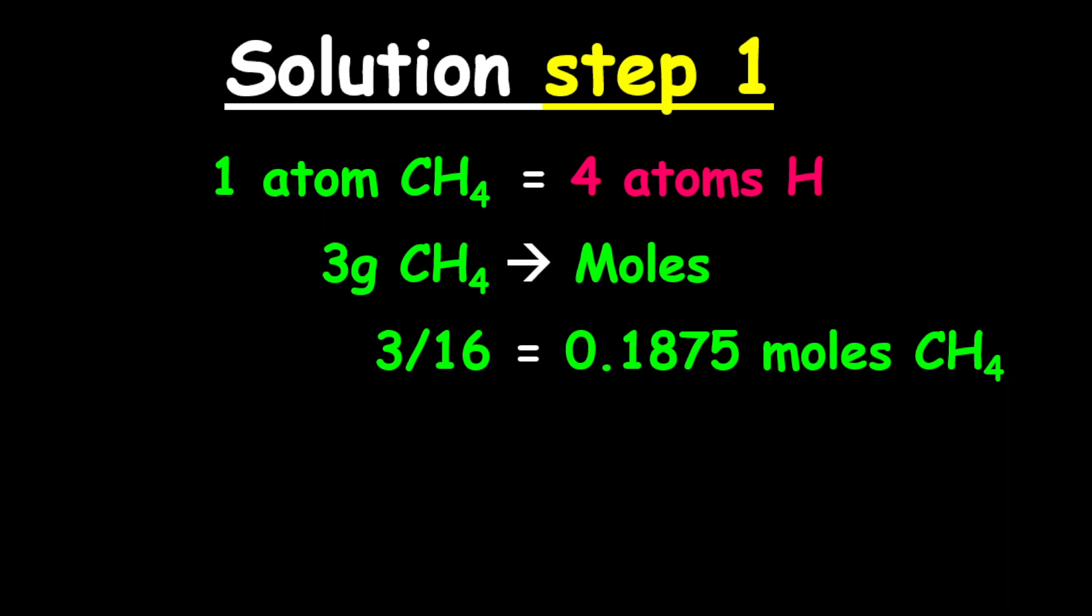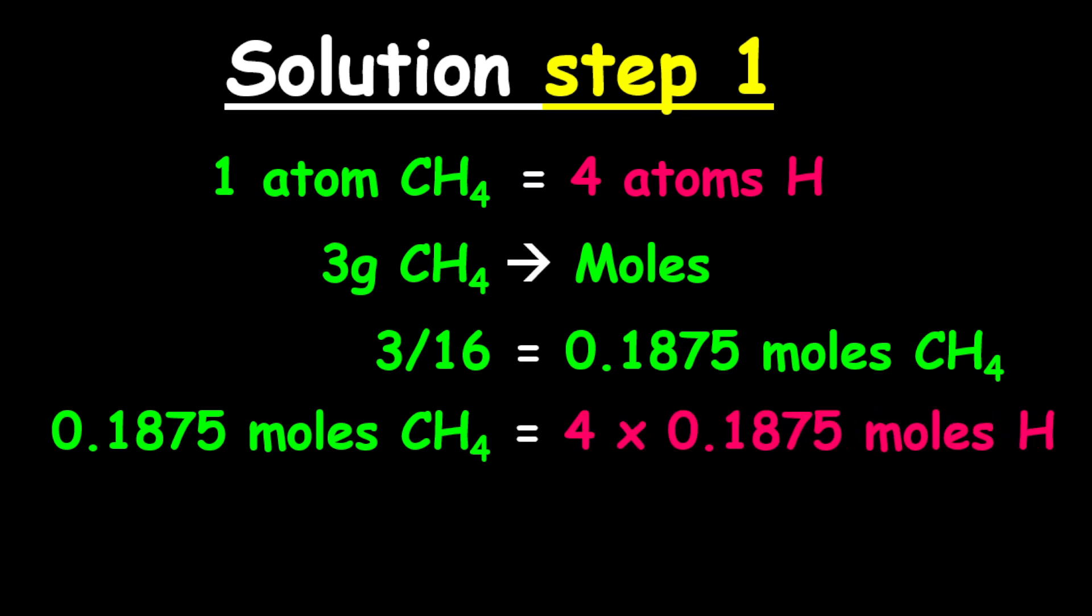Now based upon the ratio in atoms, we're going to calculate the number of moles of hydrogen. So therefore, 0.1875 moles of CH4 is equivalent to 4 multiplied by 0.1875 moles of hydrogen.